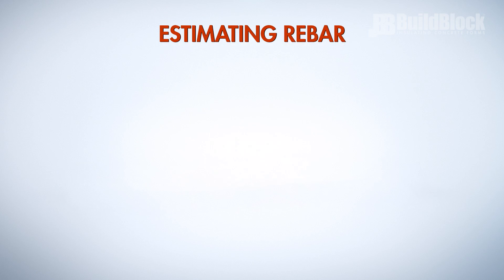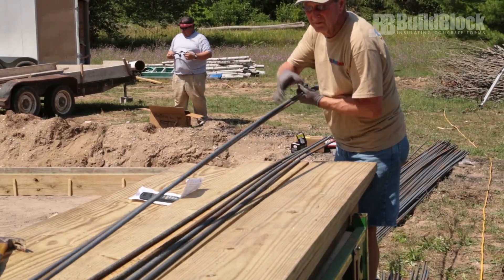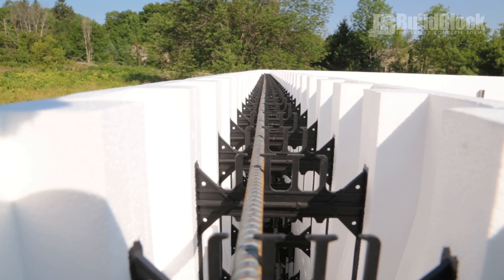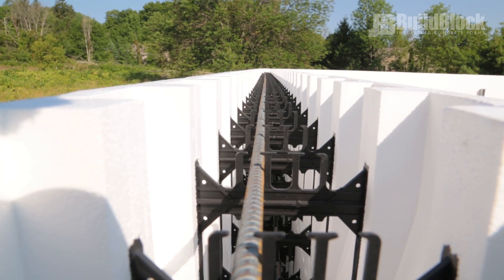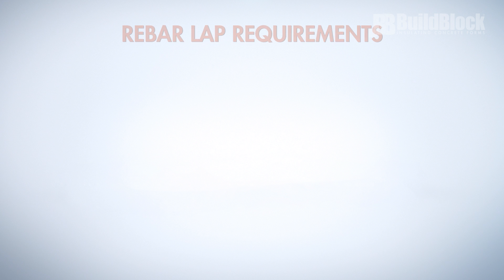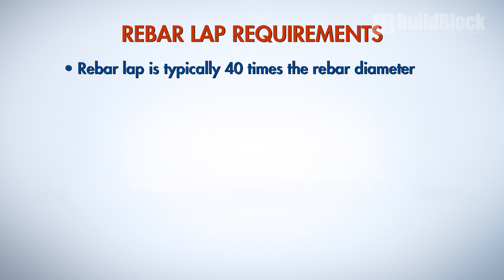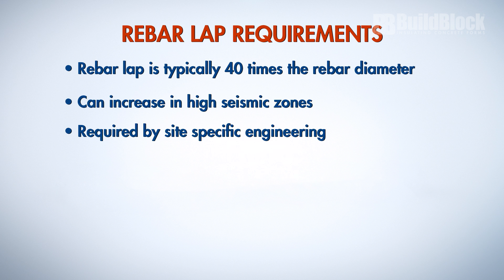Estimating rebar: we'll estimate the amount of rebar needed in a single story structure using 10 inch forms or less. In typical structures, the concrete rebar lap is 40 times the bar diameter. This can increase in high seismic zones or as required by site-specific engineering.